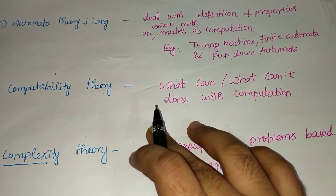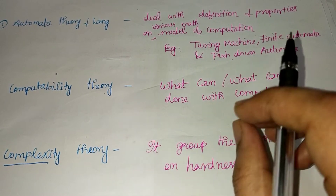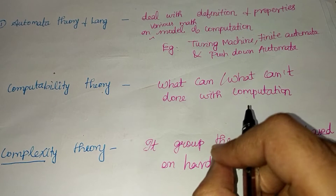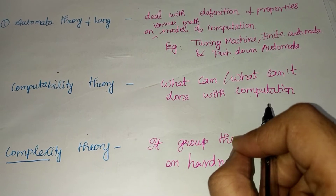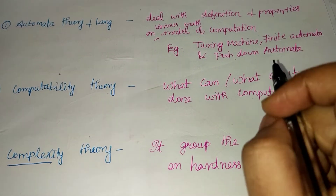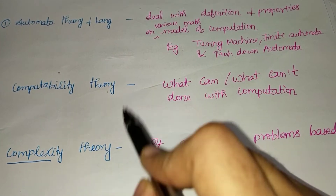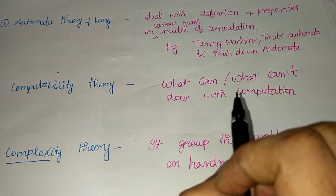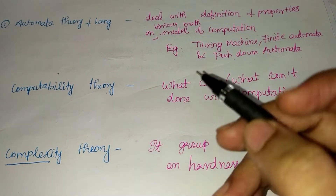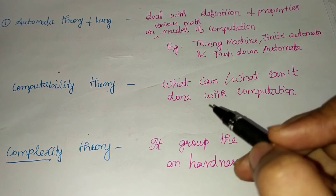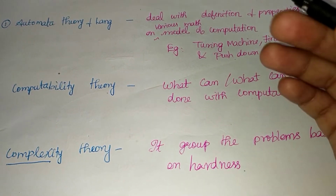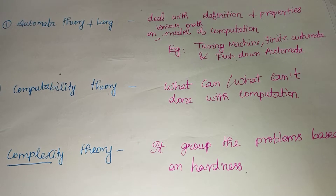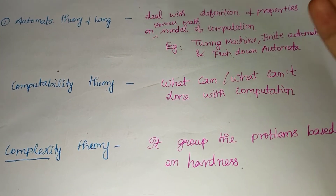Computability Theory deals with whether we can solve a given problem using a computer. It is concerned with the decision that a computer can make — whether we can solve a problem or not.